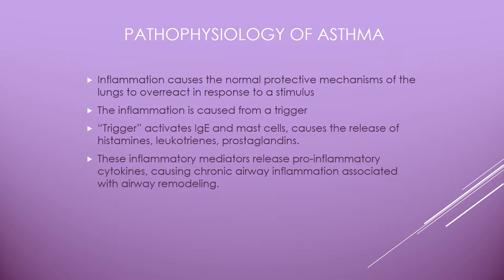The pathophysiology of asthma: inflammation causes the normal protective mechanisms — mucus formation, mucosal swelling, airway muscle contraction, and coughing — to overreact in response to a stimulus. A trigger activates IgE in the mast cells, causing release of histamines, leukotrienes, and prostaglandins. Triggers can increase the frequency and severity of smooth muscle contraction, bronchospasms, and airway responsiveness. Triggers can be exercise, infectious agents, allergens, fragrances, food additives, pollutants, weather changes, or even strong emotions.